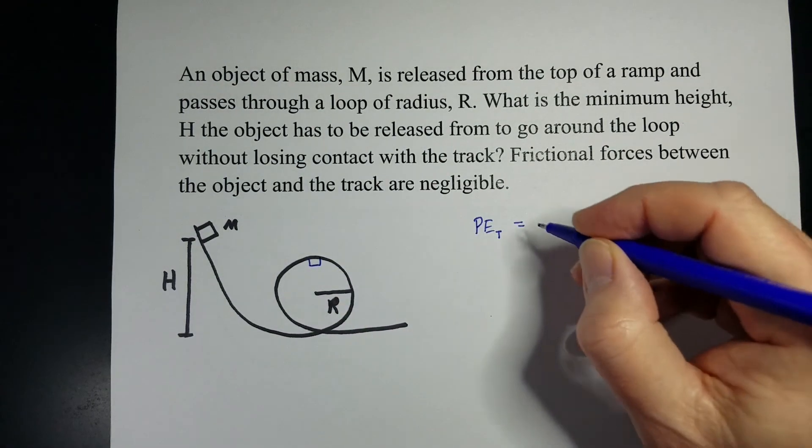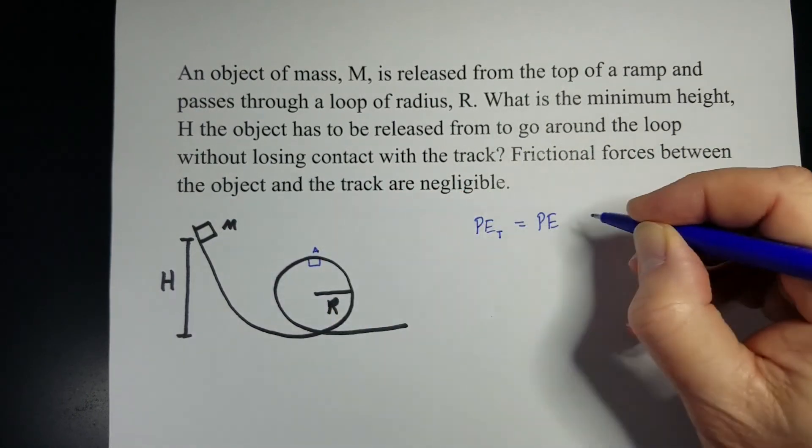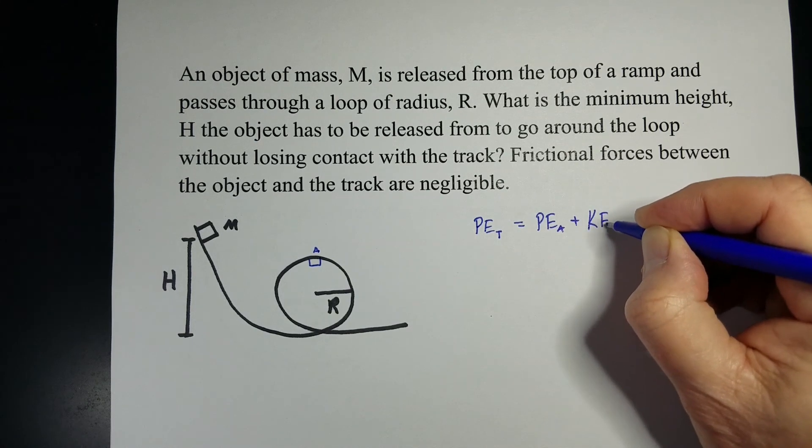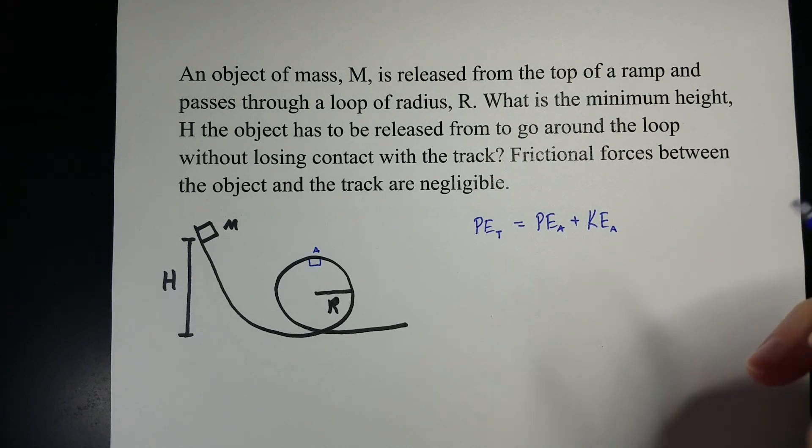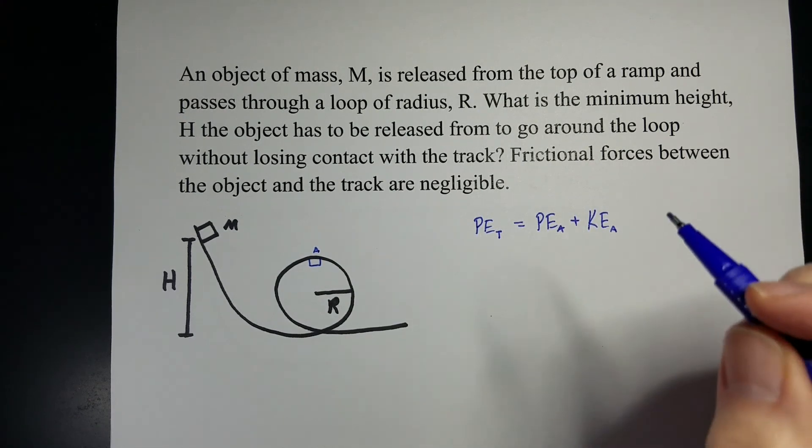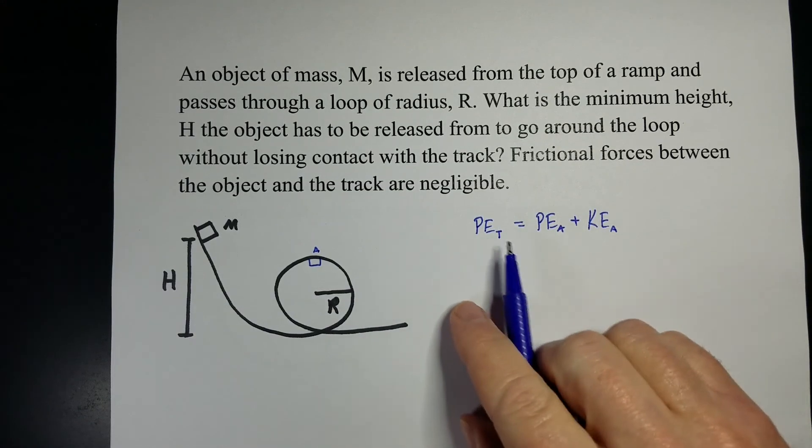And at the very top up here, we've got some potential energy at that location, let's call it A, and some kinetic energy also at that point A. And we need to figure out what height we need to drop it from to make it through that loop. So that's the energy part of it.